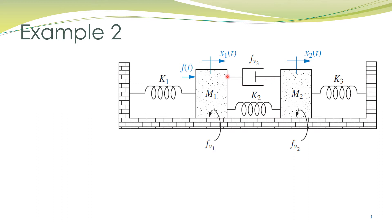For the damper, this end has displacement x1 and the other end can have a different displacement — let's call it x2. Both ends of mass m2 have the same displacement x2. For spring k3, this end has displacement x2 and the other end is fixed.